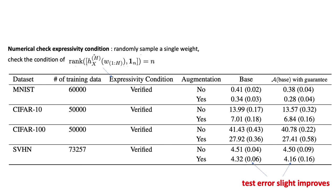Empirically, we are able to show that for the following four datasets: MNIST, CIFAR-10, CIFAR-100, and SVHN, we are able to check its expressivity condition numerically.